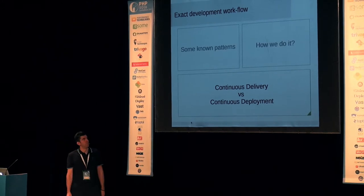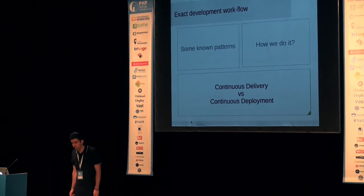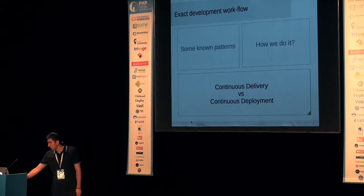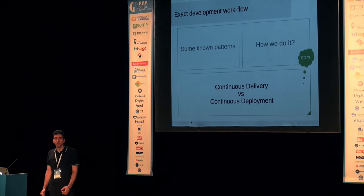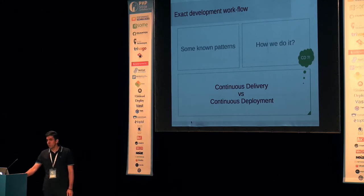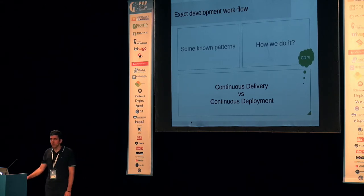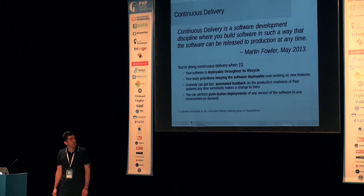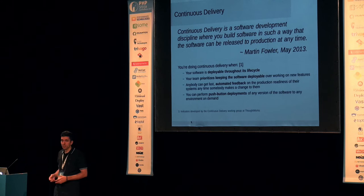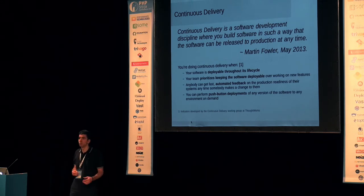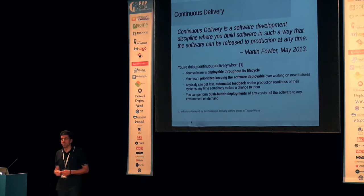Continuous delivery and continuous deployment. We cannot talk about the development workflow without mentioning the main part — continuous delivery. Usually when you read some articles, you simply see CD. But what is CD? Is it continuous delivery or continuous deployment? You need to go really deep into the topic to be aware of the difference. So how many of you know what continuous delivery is? Let's try to explain this. Continuous delivery, by Martin Fowler, says it's a development practice which allows you to build software in such a way that it can be releasable to production at any time. So whatever you do, whenever you have some changes in your code, you should be pretty sure that it can go live without causing any problems.